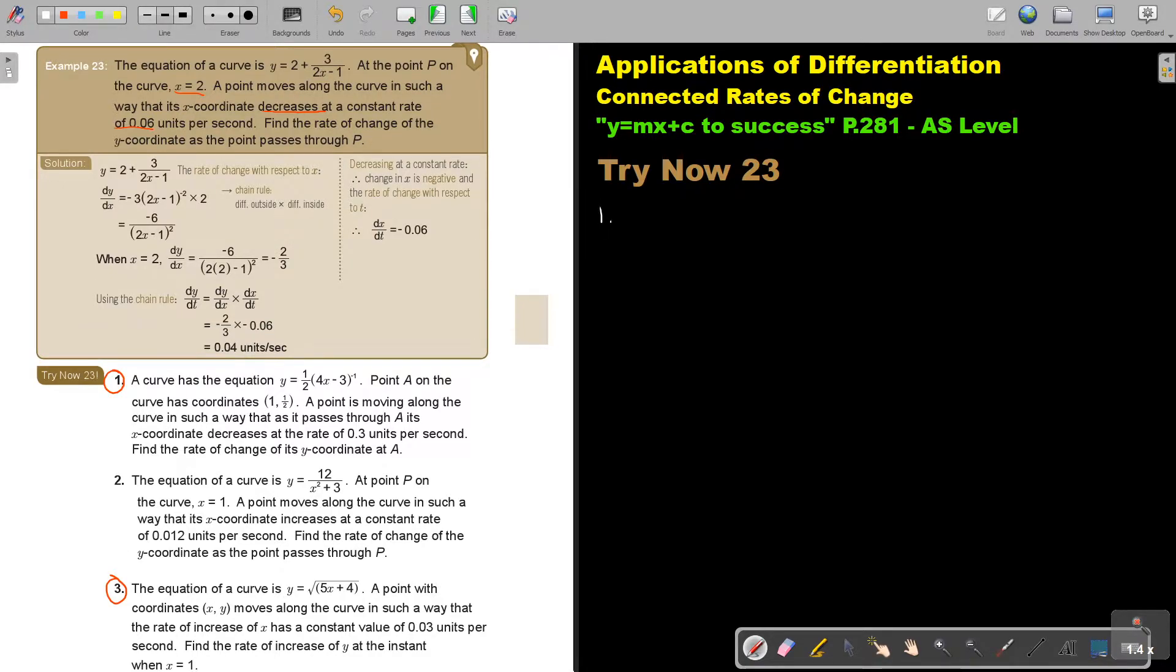Number 1. The curve has the equation this. Point A on the curve has this coordinate. This is very important, because I can see my X value there. A point moves along the curve in such a way that it passes through A, it decreases, this is also very important, decreases at the rate of 0.3. Let's start. So again, I'm going to have my two sides. So in this case, let's start with this one. I will go back to the second part now.